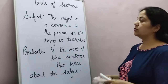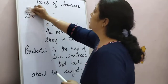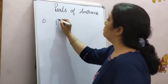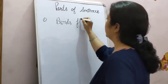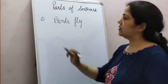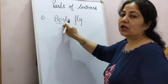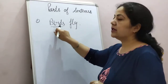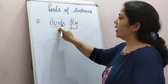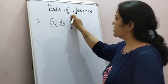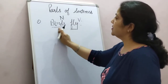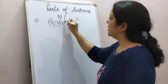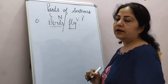Now I am going to write a few sentences on the board to make this topic more clear to you. First example: birds fly. In this sentence, what is the subject? Birds — because we are talking about birds, and birds is a noun. The action done by birds is fly, so fly is a verb. The noun part is called subject and the verb part is called predicate.